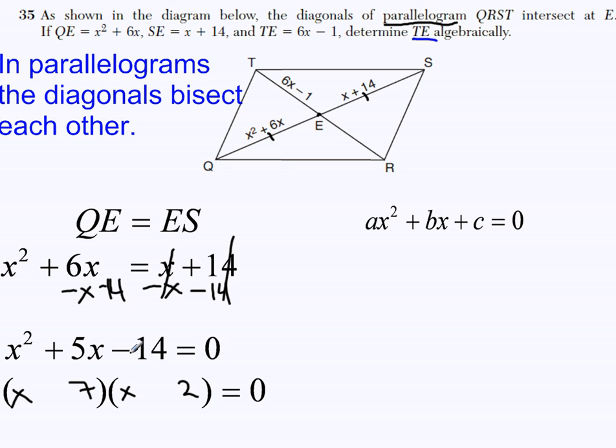Because, since I need to multiply to a negative 14 and I need to add up to a positive 5, I can go ahead and make this positive and make this negative. Because 7 plus negative 2, that's 5. And 7 times negative 2, that's negative 14.